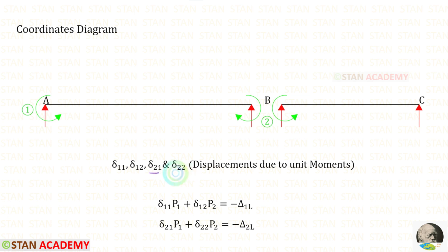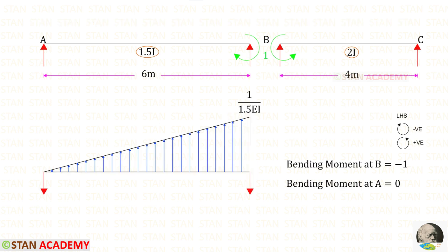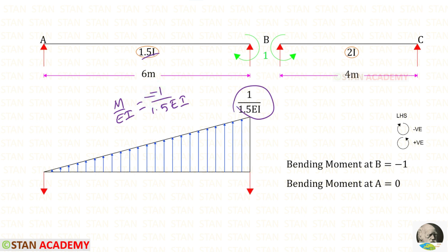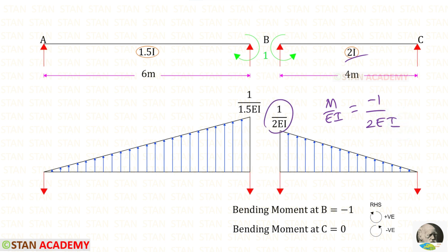Now we are going to find theta 2,1 and theta 2,2 by applying unit moment in the direction of MB. We draw the M upon EI diagram. For beam AB: at point B the moment is minus 1 and at point A it is 0, so M upon EI is minus 1 upon 1.5EI; since it is negative, the UVL acts upwards. For beam BC: at point B the moment is minus 1 and at point C it is 0, so M upon EI is minus 1 upon 2EI; since it is negative, the UVL acts upwards.